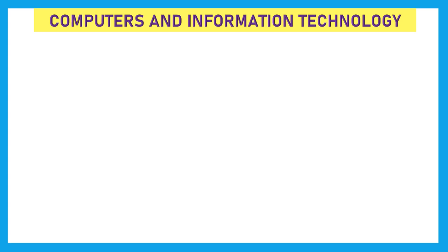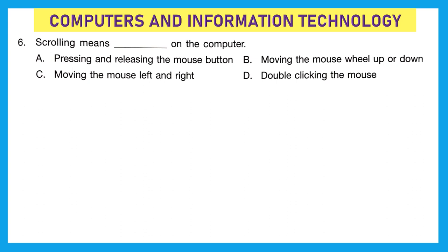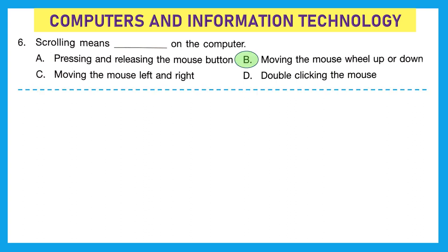Now we will move to the next section: computers and information technology. Question 6: scrolling means dash on the computer. On a mouse, we have a scroll button. The options are: A — pressing and releasing the mouse button, B — moving the mouse wheel up or down, C — moving the mouse left and right, or D — double clicking. The correct answer is option B: scrolling means moving the mouse wheel up or down, also called the scroll button.